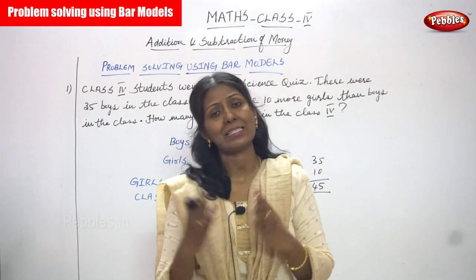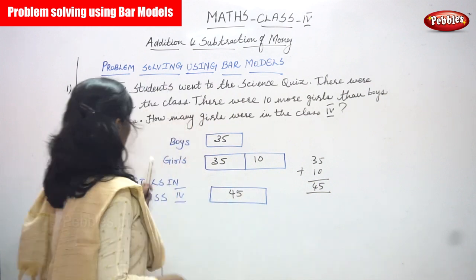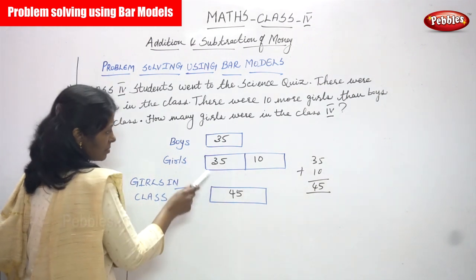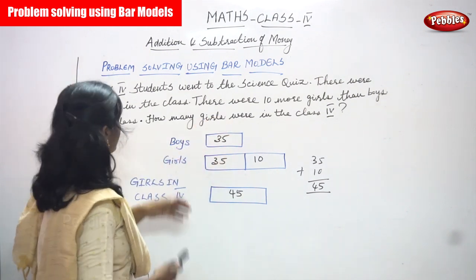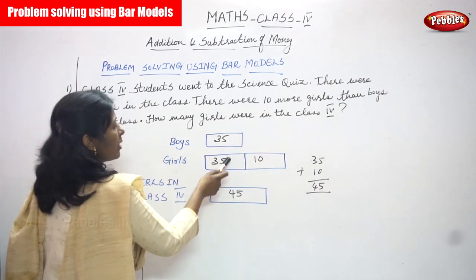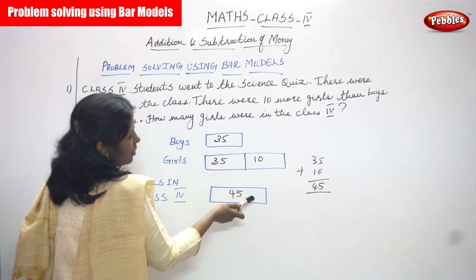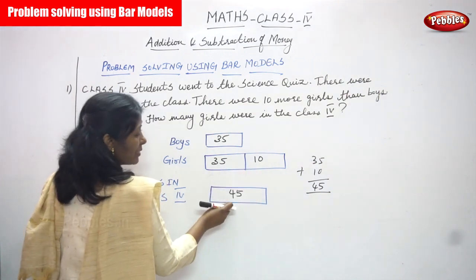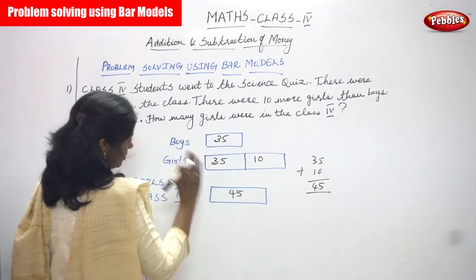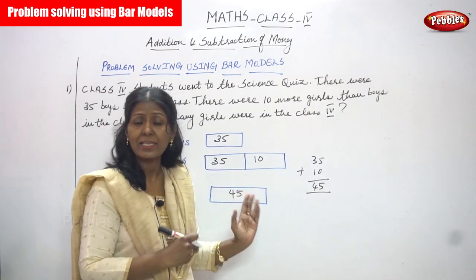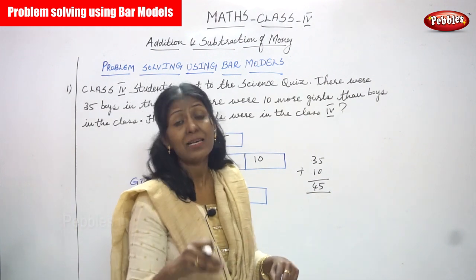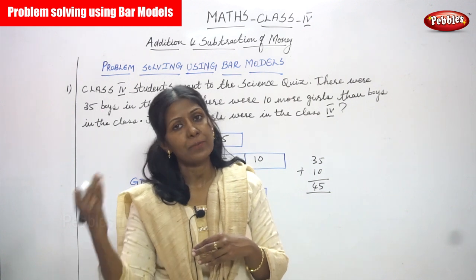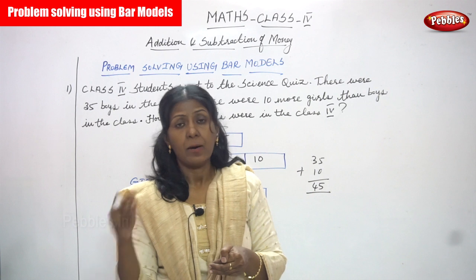This sum is addition, but you are using the bar model. In the bar model, boys is 35. For girls, you also write 35 — because the boys' strength is 35, and since there are 10 more girls than boys, you write the boys' strength plus 10 more. So you add them together to find out the girls' strength.